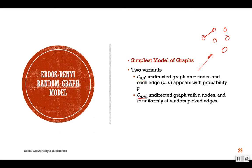The second variant is known as G(n,m), where n is the number of nodes and m is the number of edges. In this variant, we can pick m edges uniformly at random. In this discussion, we are going to focus on the first variant, which requires two parameters: n and p.